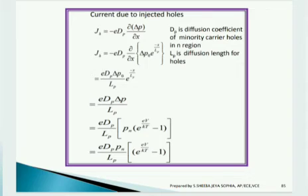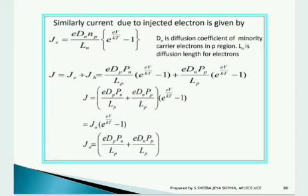Similarly, for the current due to injected electrons, the same procedure is followed, changing the diffusion constant of minority carrier electrons in the p-region to Dn and the diffusion length for electrons to Ln. We find Je for the corresponding electron injection, and finally the total current density J = Je + Jh.